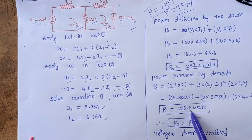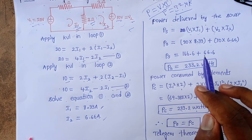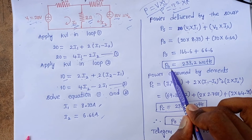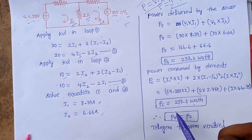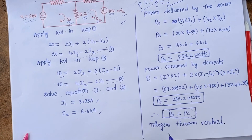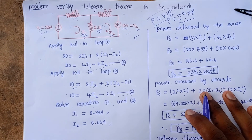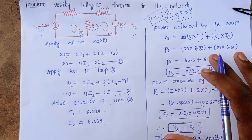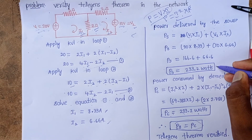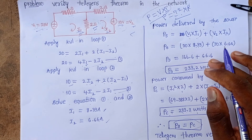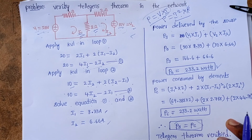Observing the result: PS = PC = 233.2 watts. Since the power delivered by the source equals the power absorbed by the elements, Tellegen's theorem is verified. Hence, Tellegen's theorem states that power delivered by the source equals power absorbed by the elements, and we have proved it here. Thank you for watching this video.